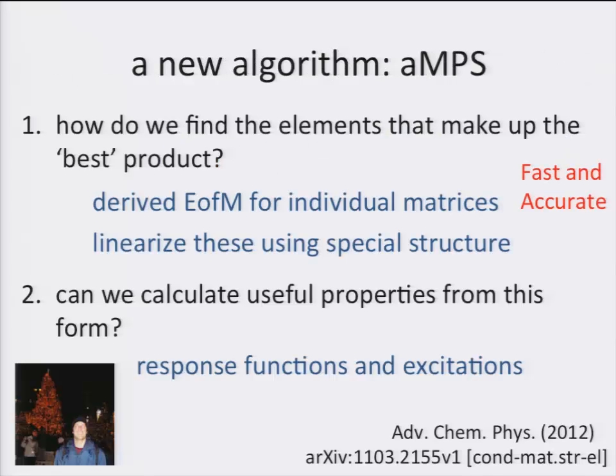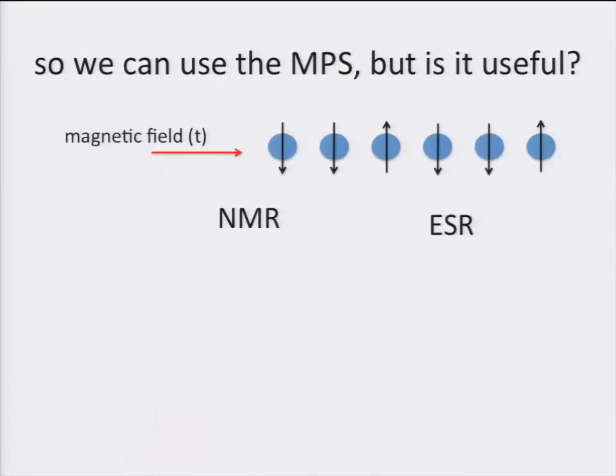So, this paper is very theoretical. There's no numerical calculations at all. Now we know that the matrix product state can, in theory, be used to study dynamics, but is it useful? Can it actually be used for a real physical system?